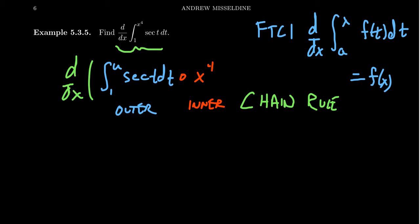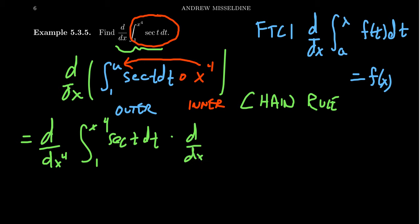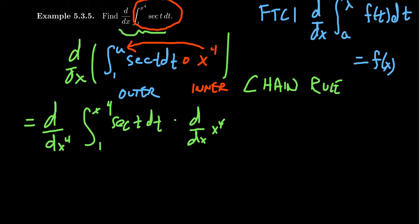The inner function is x to the fourth. You'll notice that if you plug x to the fourth in for u, this recaptures the original function. So we want to take the derivative using the chain rule. We take the derivative with respect to x to the fourth of the outer function — the integral from 1 to x to the fourth of secant(t) dt — and then multiply by the inner derivative, the derivative of x to the fourth with respect to x.